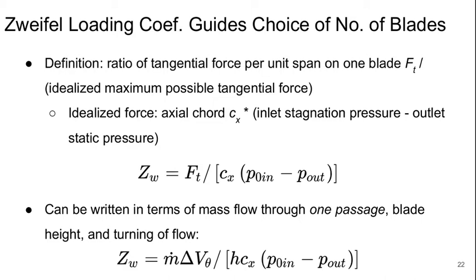We can write this in terms of the mass flow going through one blade passage. With the blade height and turning of the flow, we can introduce the blade height h and the delta v theta as the turning, and write it this way.